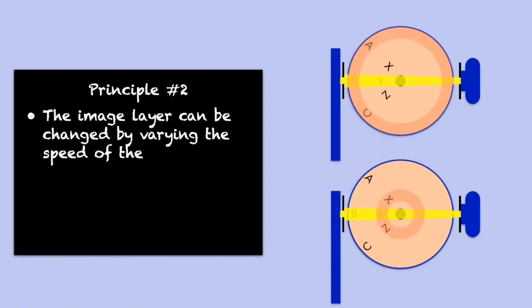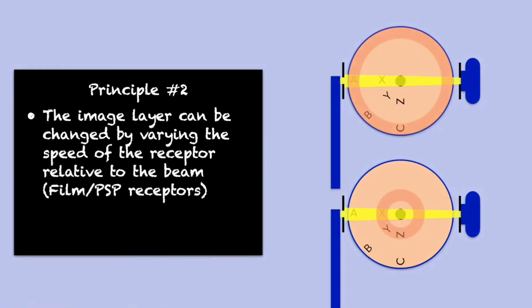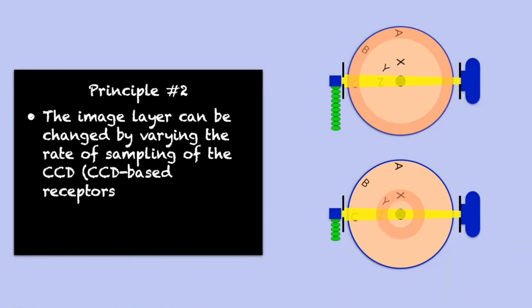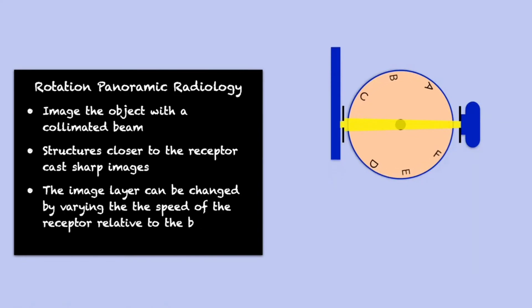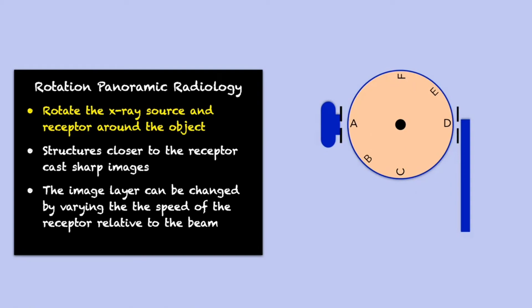So principle number two of panoramic imaging: the image layer can be changed by varying the speed of the receptor relative to the beam. This holds true for film and storage phosphor receptors where there is a physical movement of the receptor past the collimator. In CCD-based panoramic machines, a linear array of detectors is affixed behind the collimator and does not move during the exposure. In these units, changes in receptor speed are simulated by varying the rate of sampling of the CCD receptor. To accomplish panoramic imaging, we image the object with a collimated beam. Structures within the image layer will cast sharp images, and we can change the location of the image layer by varying the speed of the receptor relative to the beam. Note that the same objectives can be achieved by rotating the X-ray source and receptor around the stationary object.